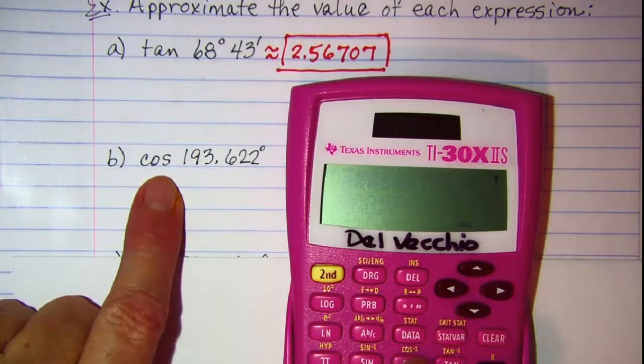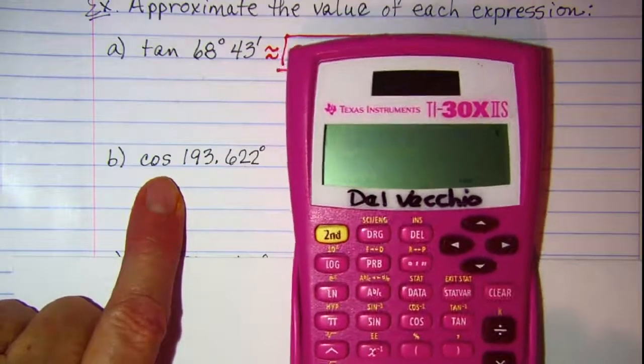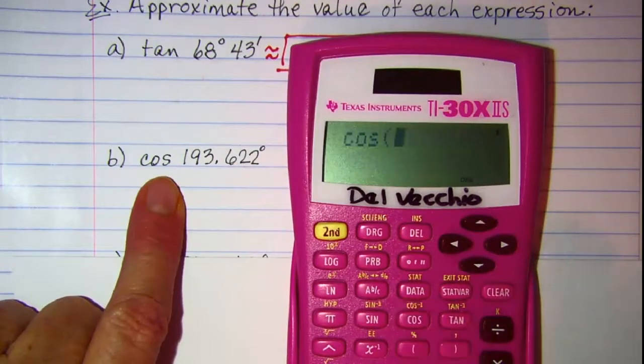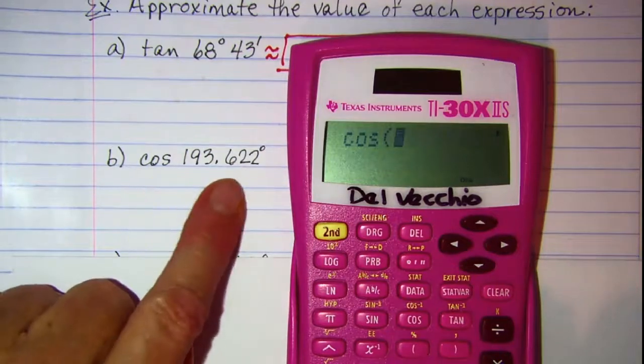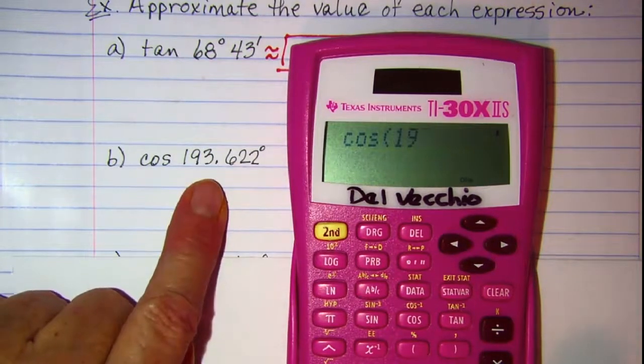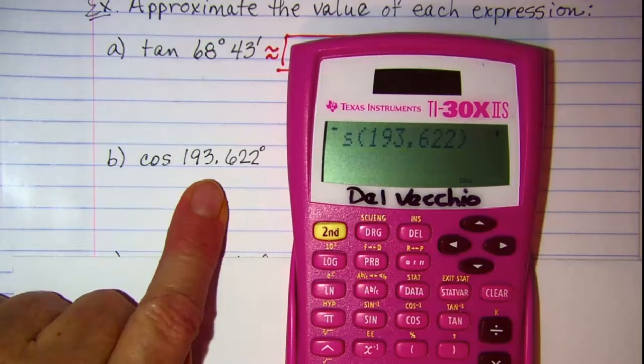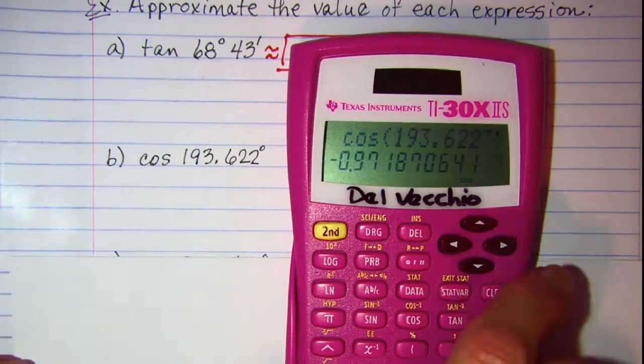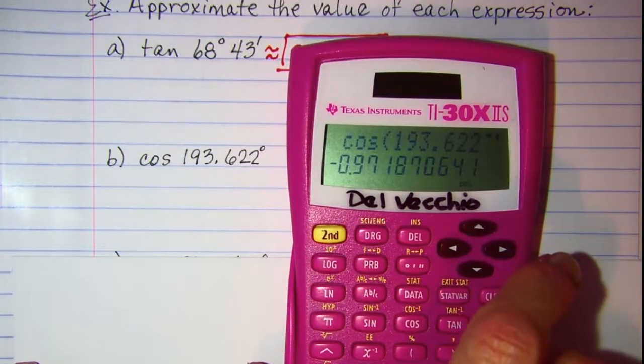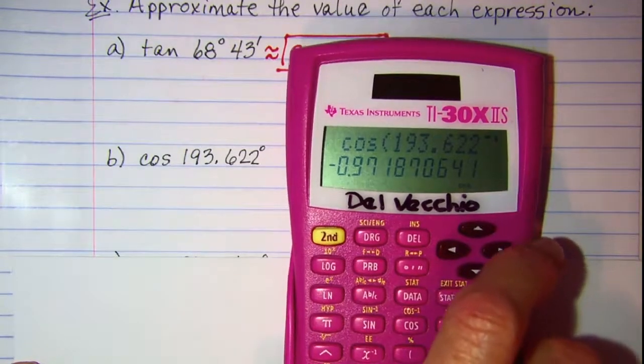which is cosine, and then this argument, 193.622. Close the argument up and hit enter, so it looks like negative 0.97187.